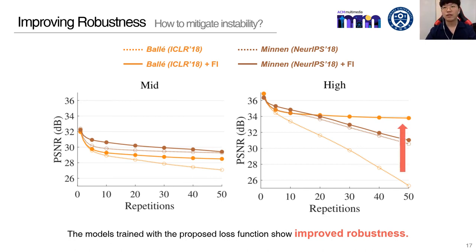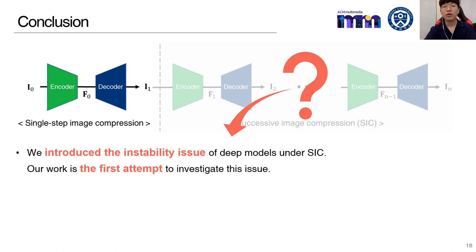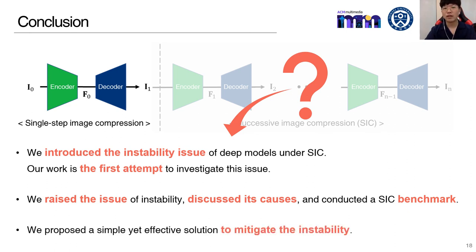In particular, the effectiveness of our method is prominent in the high bitrate group, where the instability occurs most according to our benchmark. In conclusion, we introduce the instability issue of deep models under successive image compression — our work is the first attempt to investigate this issue. We raised the issue, discussed its causes, and conducted a successive image compression benchmark. Lastly, we propose a simple yet effective solution to mitigate the instability. Thank you for listening.